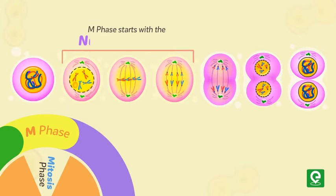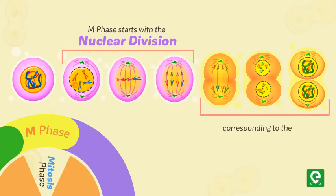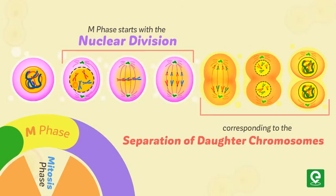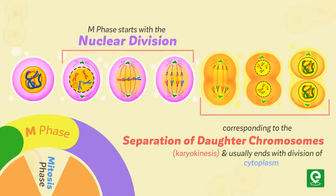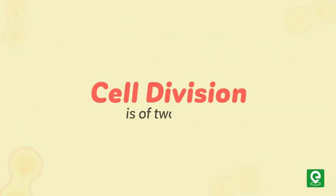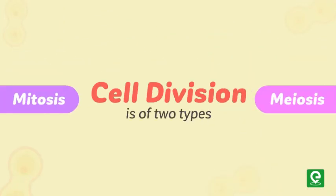The M phase starts with the nuclear division, corresponding to the separation of daughter chromosomes or karyokinesis, and usually ends with division of cytoplasm (cytokinesis). Cell division is of two types: mitosis and meiosis.